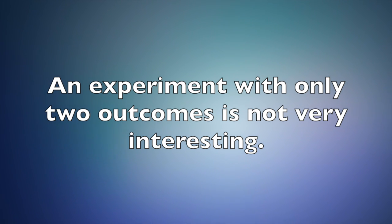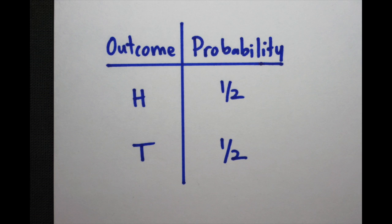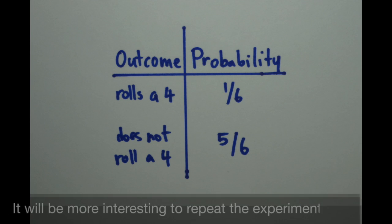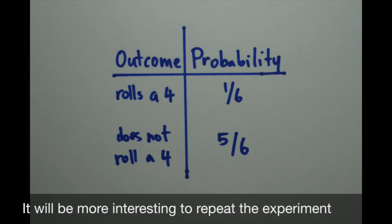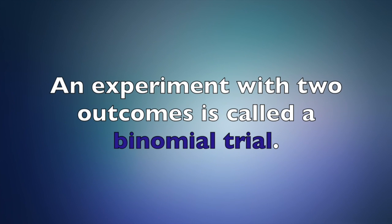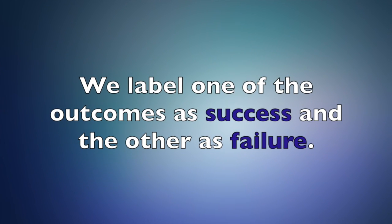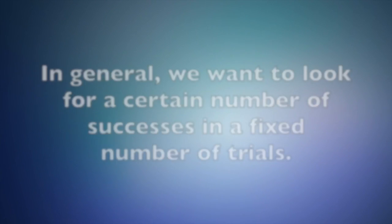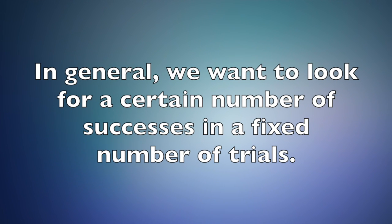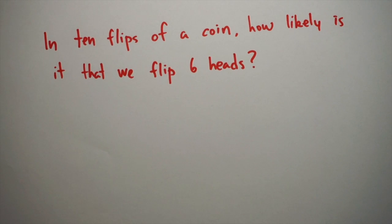An experiment with only two outcomes is not really that interesting. You can flip a coin with each outcome having probability one half, or roll a die and check if you roll a four or not — that's only two outcomes. It gets much more interesting when you repeat the experiment. An experiment with exactly two outcomes is called a binomial trial. We label one outcome as success and the other as failure, and in general we want to look for a certain number of successes in a fixed number of trials.